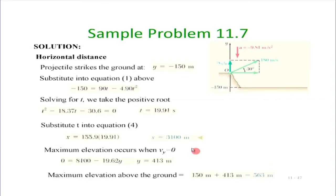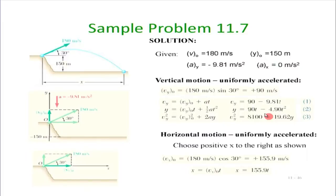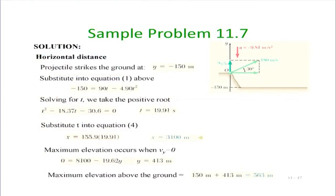For the maximum elevation, we use the equation v_y² = v_y0² + 2·a·y and set v_y = 0, since at maximum elevation the vertical velocity component is zero. Solving for y gives y = 403 meters above the firing point, or 403 plus 150 meters above the ground.